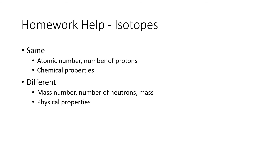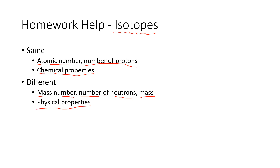Just to clarify some vocabulary when looking at your homework: isotopes have some things that are the same and some things that are different. The things that are the same include the atomic number, which tells you how many protons there are. Because the number of protons equals the number of electrons in a neutral atom, the chemical properties should be the same — since chemical properties are all about electrons. But here's what's different: the mass number will be different, meaning a different number of neutrons, and consequently the mass will be different. Because the mass is different for each isotope, they will have very slightly different physical properties.